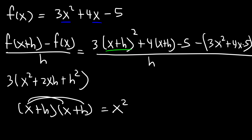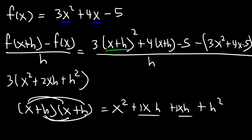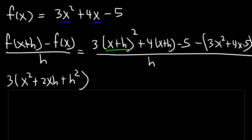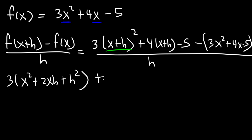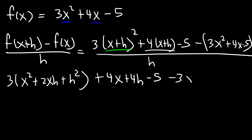From a previous example, x plus h times x plus h gives x squared plus 2xh plus h squared: x times x is x squared, x times h is xh, h times x is xh, and h times h is h squared — combining the middle terms gives x squared plus 2xh plus h squared. Distributing the 4 gives 4x plus 4h, and then minus 5. Distributing the negative sign gives negative 3x squared minus 4x plus 5. All divided by h.